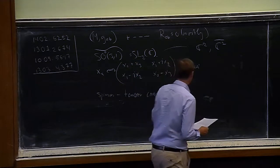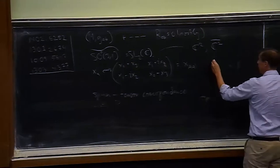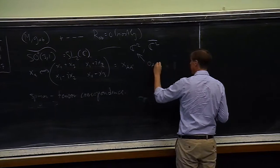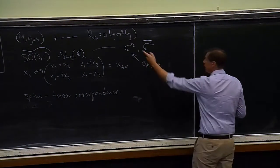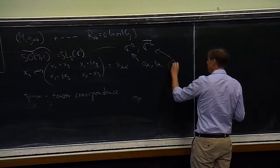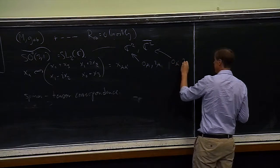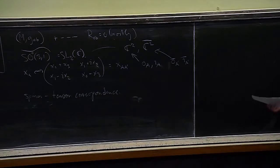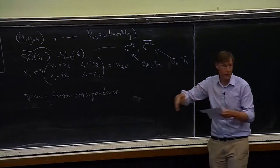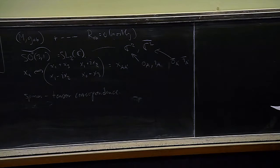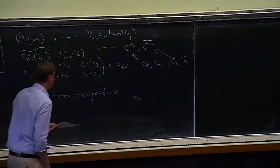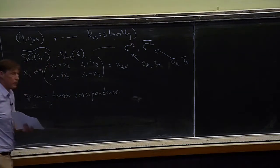In this space it's natural to introduce a spin dyad, which is simply a basis of that complex two-dimensional space. The corresponding basis is denoted with primed indices. Properly, there should be a complex conjugate on those. Having this dyad allows us to expand things out in terms of scalar components, which is sometimes convenient, but in principle should be avoided.